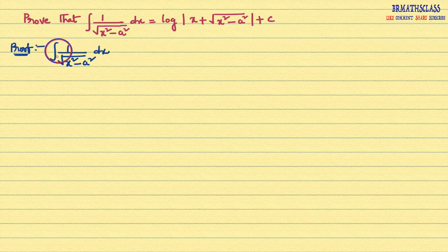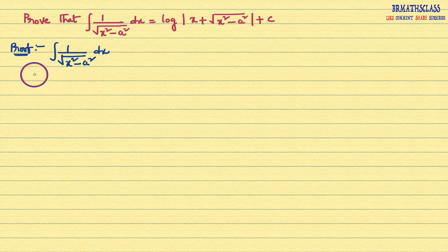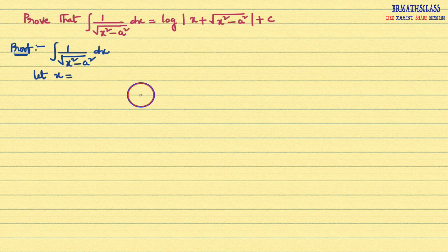First, I consider the question: integral of 1 divided by root over x squared minus a squared dx. We do this problem by substitution method. In substitution method, we will consider x as something.